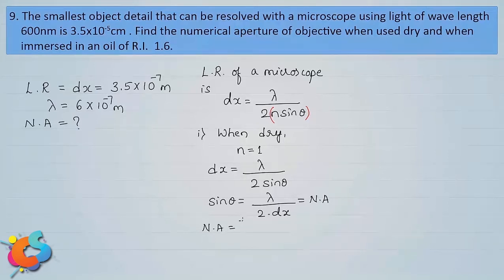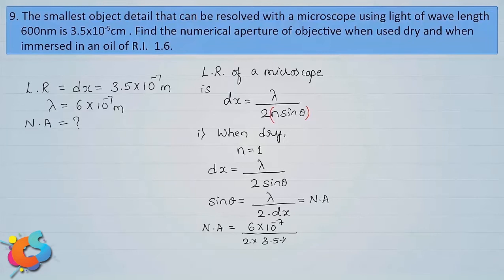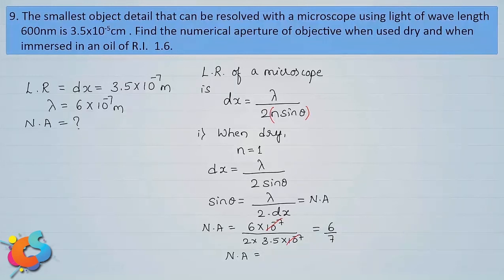Substituting the values: numerical aperture (dry case) = λ / (2·DX) = (6 × 10⁻⁷) / (2 × 3.5 × 10⁻⁷). The 10⁻⁷ cancels, leaving 6 / 7, so the numerical aperture for the first case is 0.86.